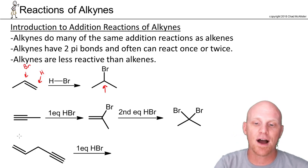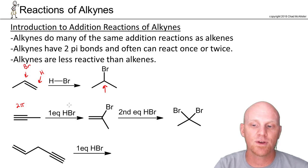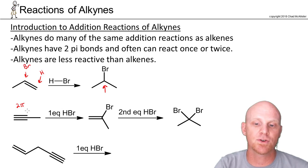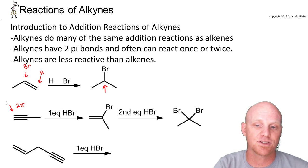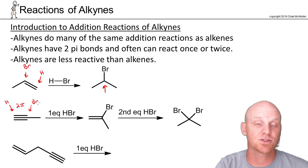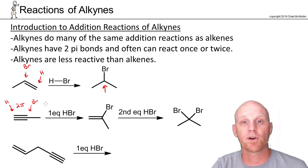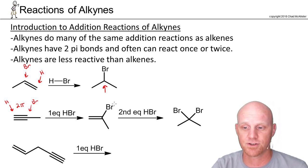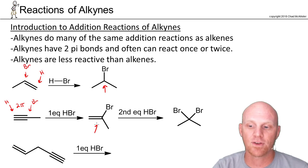With an alkyne you have two pi bonds, so now you can add one equivalent or two, and it does the same thing. The H adds on the less substituted side and the bromine adds on the more substituted side — this is also a Markovnikov addition — and it will form an alkene.